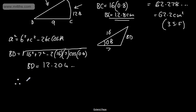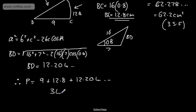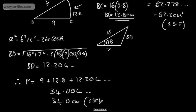Therefore, the perimeter will be equal to 9 + 12.8 + 12.204... Adding these together gives 34.004... So I'm going to say 34.0 centimetres, given to three significant figures. That completes the second part of the question, also for four marks, using the cosine rule and the arc length formula.